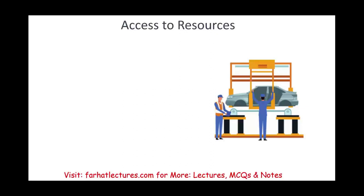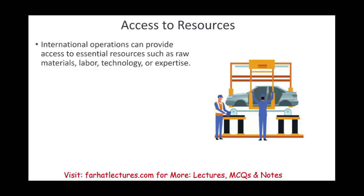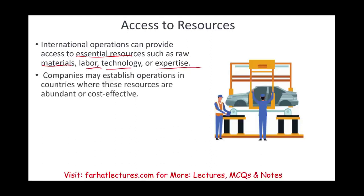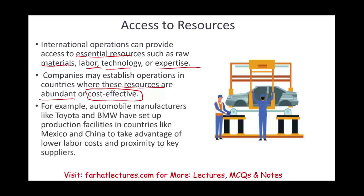International business also gives you access to resources. It provides access to essential resources such as materials, labor, technology, or expertise. Companies establish operations in countries where those resources are abundant and, most importantly, cost-effective. For example, automobile manufacturers like Toyota and BMW have set up facilities in Mexico and China to take advantage of low labor costs.